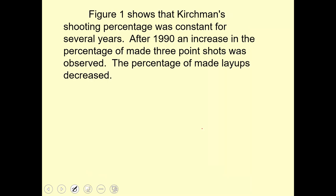Let's look at one paragraph. We're going to walk through three different versions of this paragraph. As you can guess, the first one is not so good and the third one is closer to being the right one. So here's one: 'Figure 1 shows that Kirchman's shooting percentage was constant for several years. After 1990, an increase in the percentage of made three-point shots was observed; the percentage of made layups decreased.' The first thing that's wrong with this is that it is a really short paragraph.